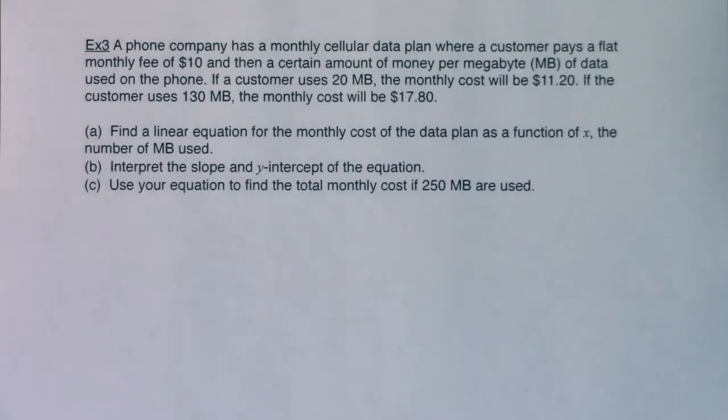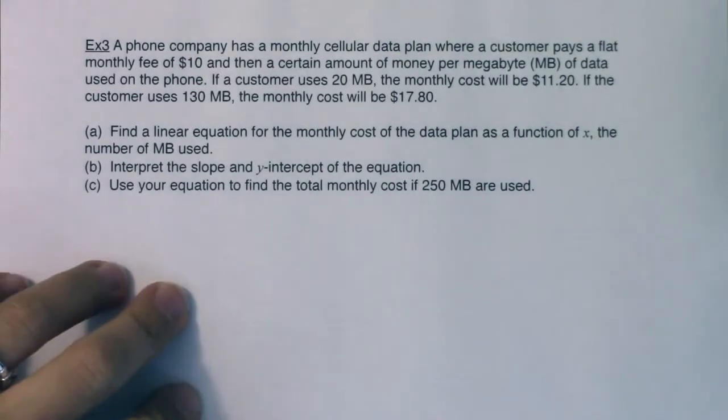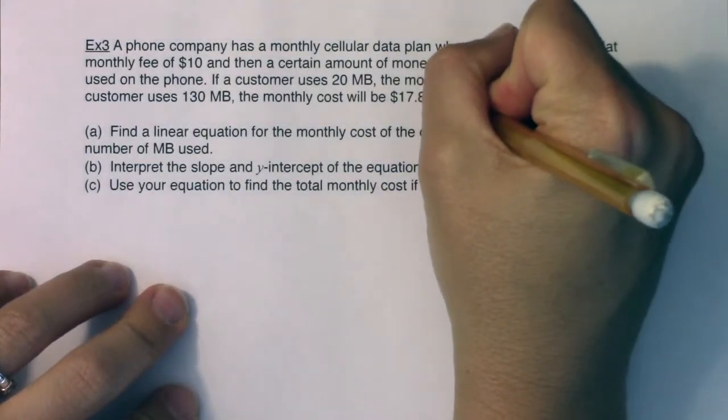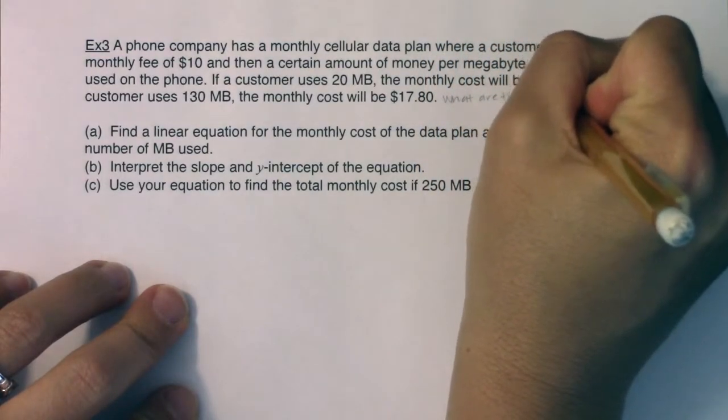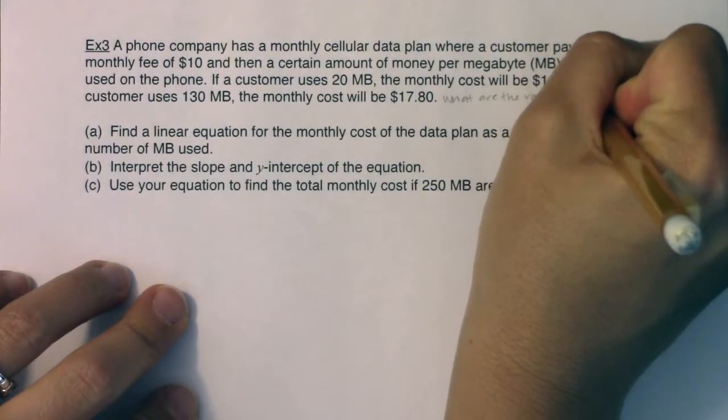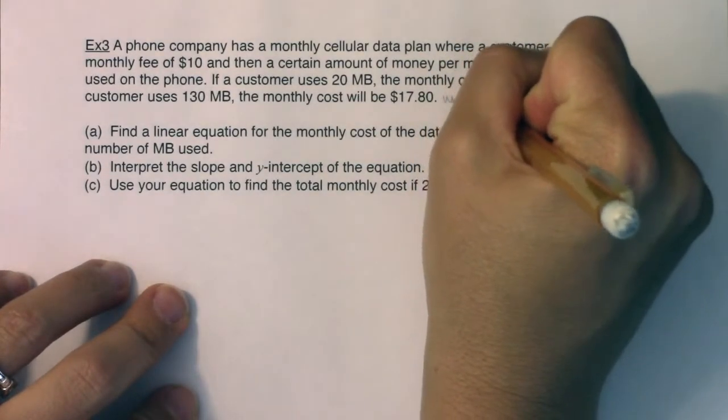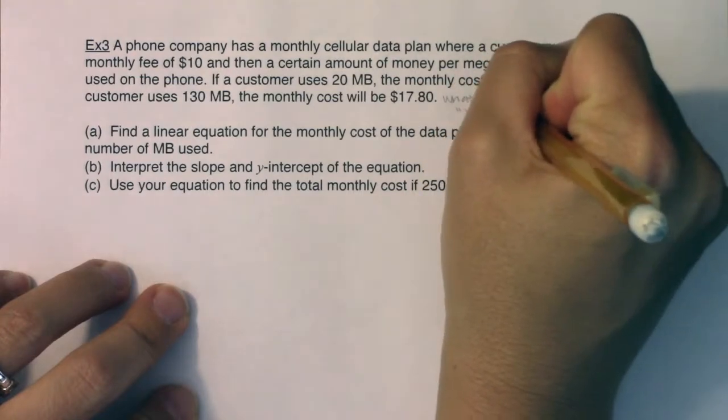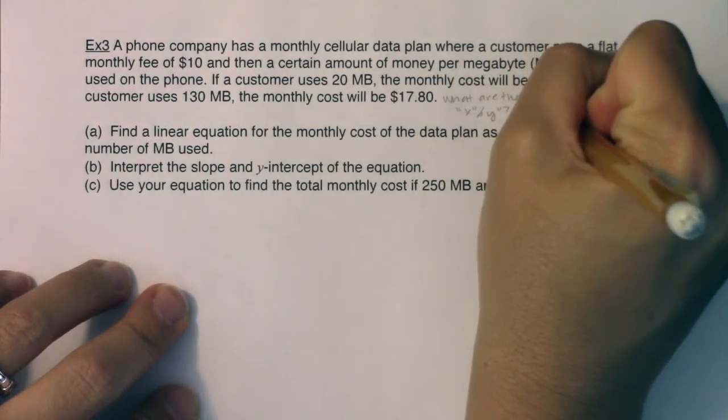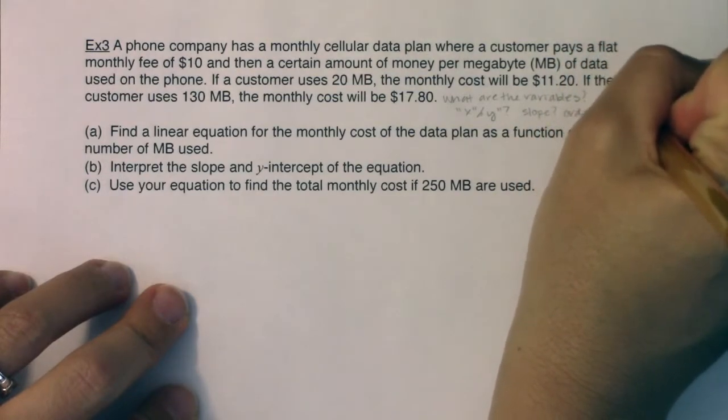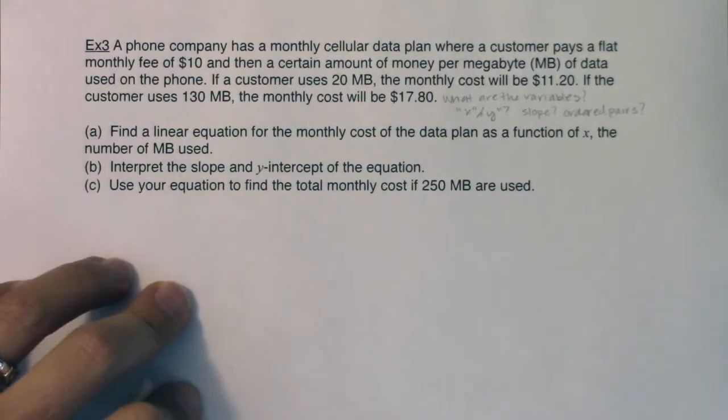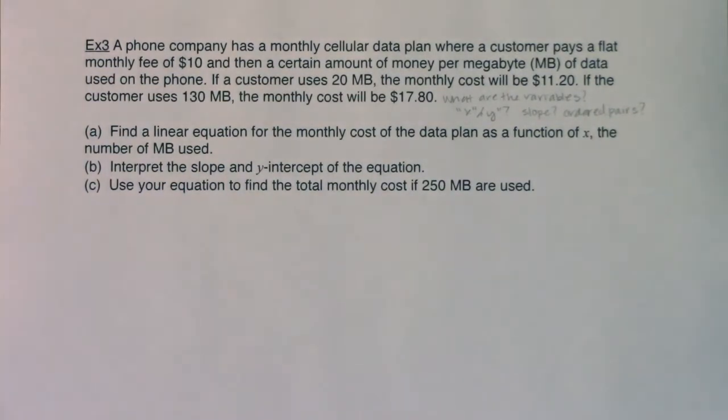Hey Math 31, here we are with example three. Let's read through this problem and see if we can listen for a couple of things. Our standard questions: What are the variables? What was X and what was Y? Was I given a slope? Was I given ordered pairs? Some of each? Those are your general questions that you'll be asking yourself when you come across these word problems.